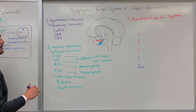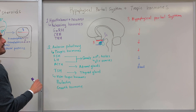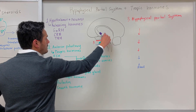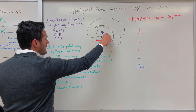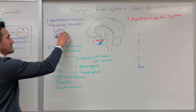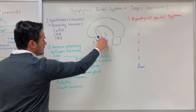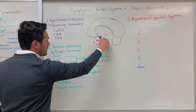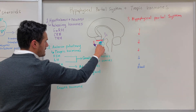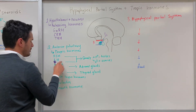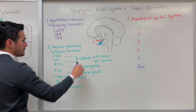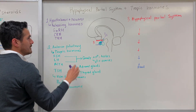Within the hypothalamic neurons, we synthesize these releasing hormones. They travel along the axon, get into the portal system, reach the anterior pituitary, stimulate the release of tropic hormones, and those tropic hormones then get into the blood.